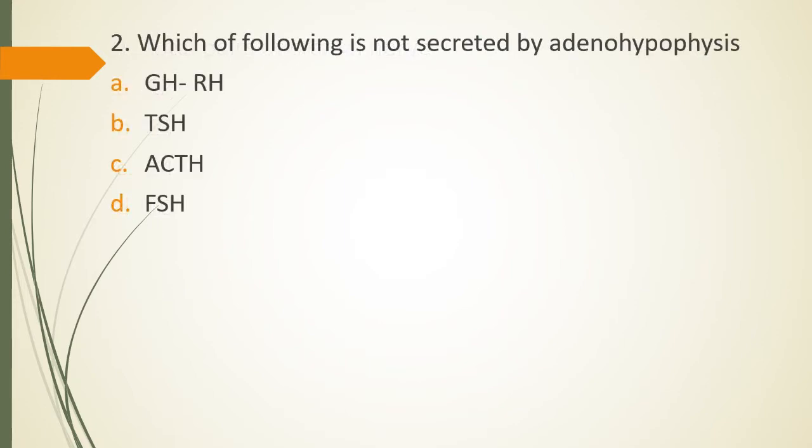Question 2, which of the following is not secreted by adenohypophysis? GHRH, thyroid stimulating hormone or TSH, ACTH, FSH. The correct answer is option A, GHRH which is growth hormone releasing hormone. It is a hypothalamic hormone released by hypothalamus that acts on adenohypophysis and carries out release of growth hormone which is GH. What is adenohypophysis? Anterior pituitary is called as adenohypophysis.